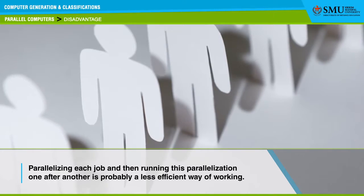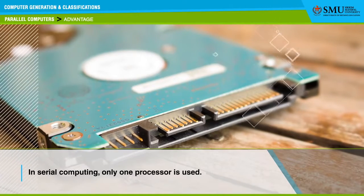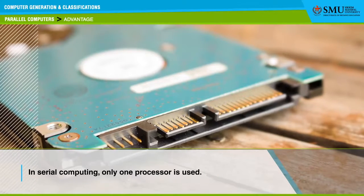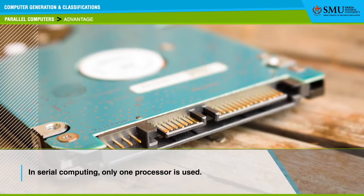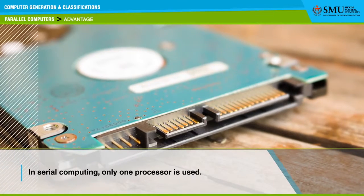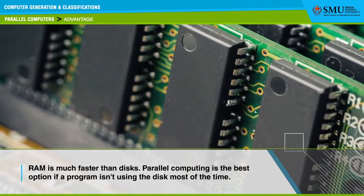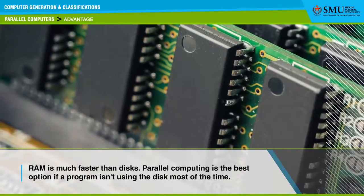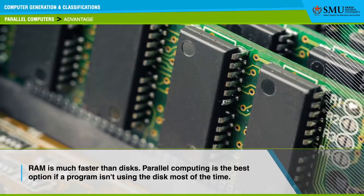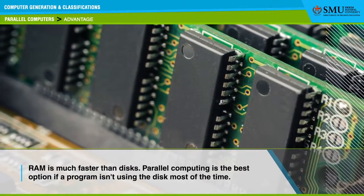Parallelizing each job and then running this parallelization one after another is probably a less efficient way of working. Occasionally, this isn't true. In serial computing, only one processor is used and it uses a disk to store the computation. Since RAM is much faster than disk, parallel computing is the best option if a program isn't using the disk most of the time.